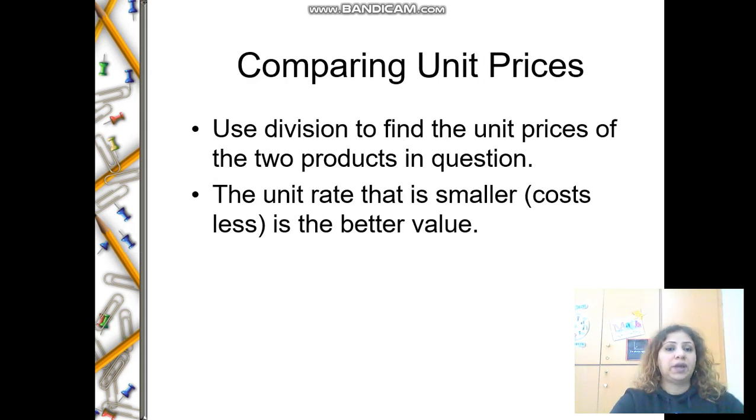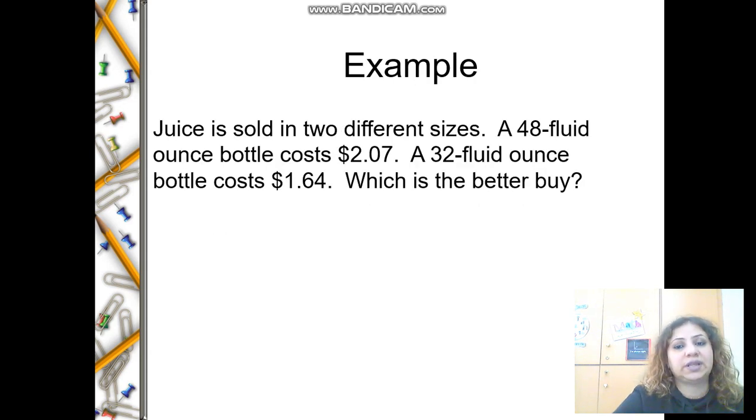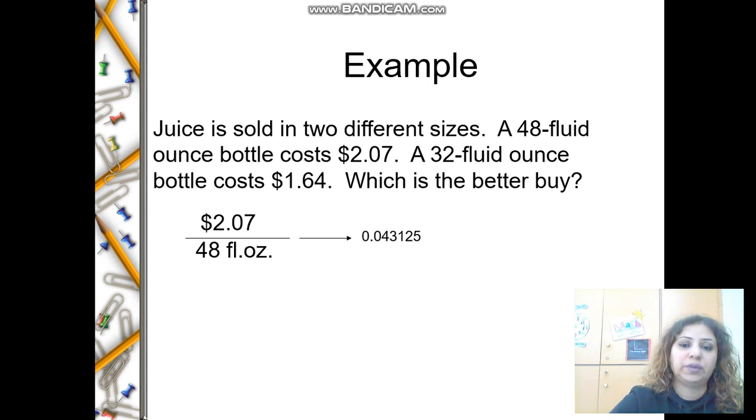Comparing unit prices: How am I going to compare unit rates? Use division to find the unit prices of two products, then you can compare and see which one is less and which one is more. Juice is sold in two different sizes: a 48 fluid ounce bottle costs $2.07, and a 32 fluid ounce bottle costs $1.64. Which is the better buy? First, you need to find the unit rate. Let's write the ratios: 2.07 divided by 48, and the other ratio is 1.64 over 32.